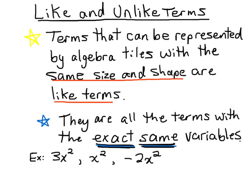So these are three different terms, so we're trying to decide if they're like terms or not. Let's draw the tile models for them. 3x squared would be three large square tiles. x squared would be one large x squared tile. And negative 2x squared would be two x squared tiles, but the red side, or the shaded in ones, because they're negative.